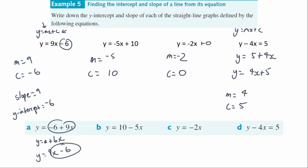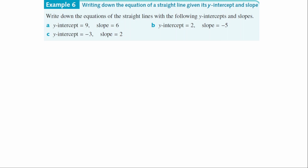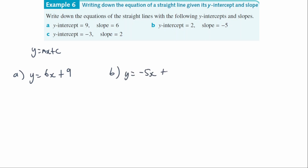Now that we can find the gradient and y-intercepts from equations, we need to go the other way: find the equation given the y-intercept and slope. Remembering y = mx + c — for question (a), y-intercept is 9 and slope is 6, so y equals 6x plus 9. For question (b), y-intercept is 2 and slope is negative 5, so y equals negative 5x plus 2.